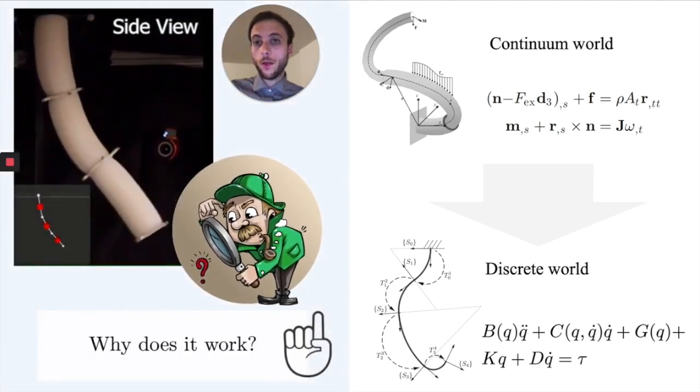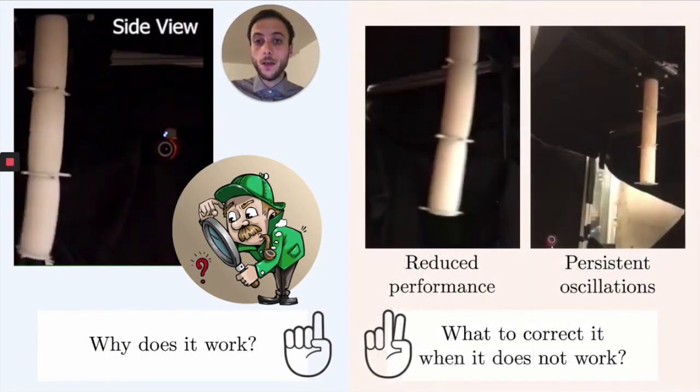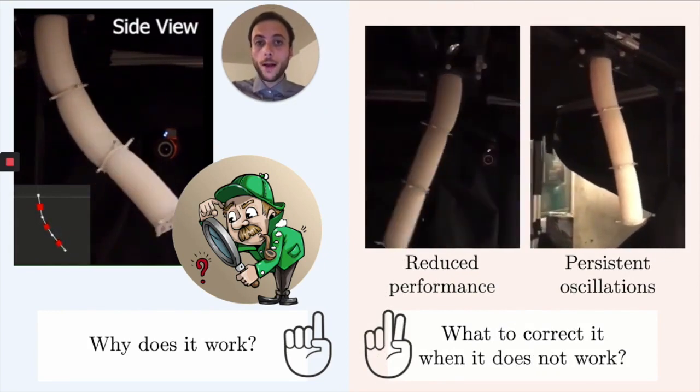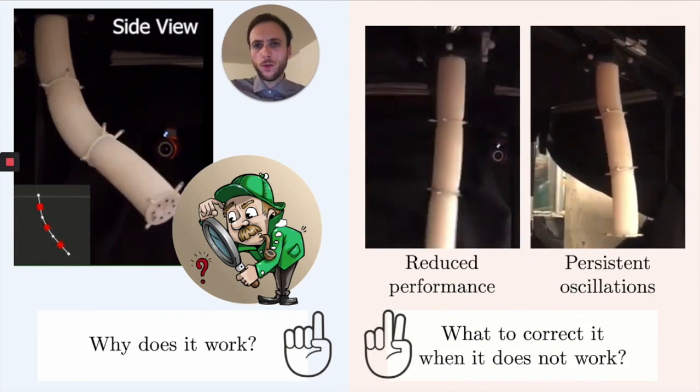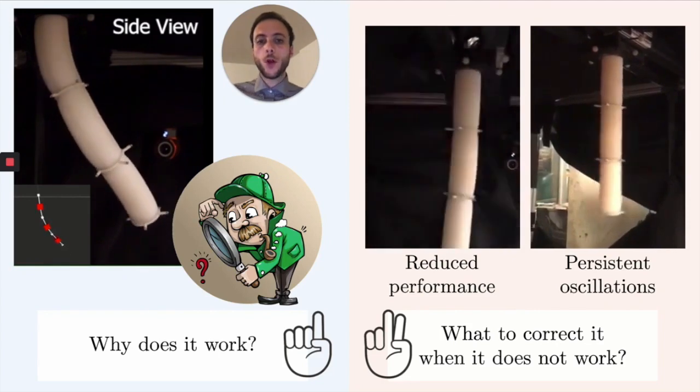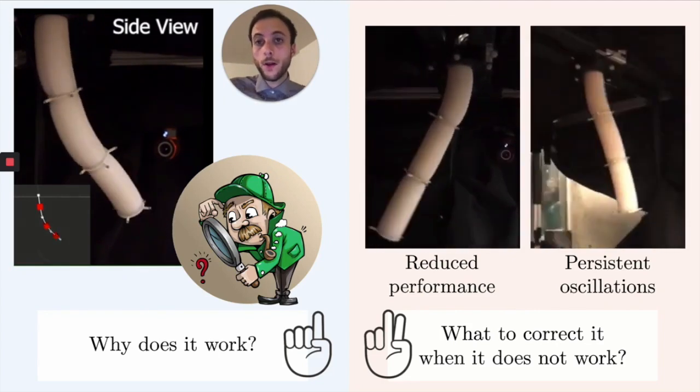And although this question I think is quite interesting from a theoretical standpoint, from a practical standpoint, it is even more important to understand what to do when the system doesn't work. So when, for example, when you take some gains with respect to some other, you observe reduced performance or you observe some instability.